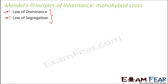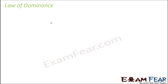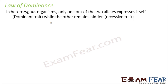These were the first laws that could explain how traits are passed on from one generation to the next. Let us look at each of these laws one by one. First, the law of dominance: in heterozygous organisms, only one out of the two alleles expresses itself. Whichever expresses itself is called the dominant trait, while the other which remains hidden is called the recessive trait.